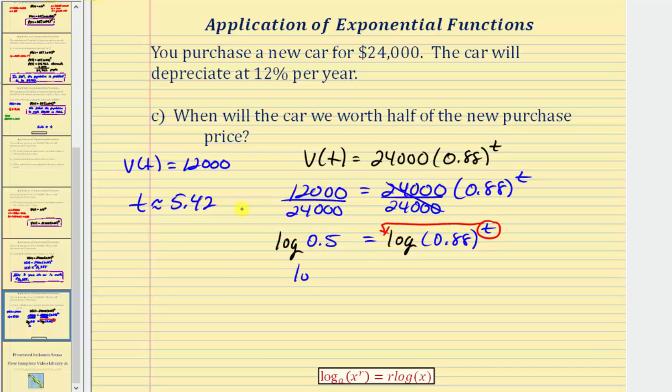So now we have the common log of 0.5 equals t times the common log of 0.88. And we'll isolate t by dividing both sides by common log 0.88. Simplifying, we have t is going to be approximately equal to this quotient here, which again we know should be approximately 5.42.